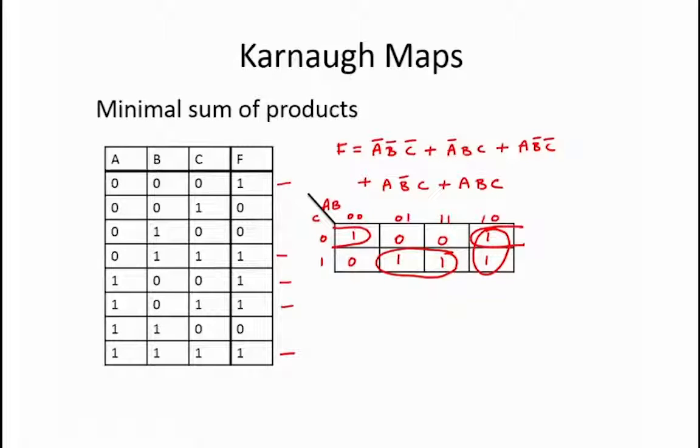Note that having overlapping ones in your groupings is allowed and desired if it will result in a simpler product term. In our example, we circle the bottom two middle ones which represent the term BC because A appears in both its low and high form in the grouping. The next set of ones are the two in the rightmost column. These ones represent the term A not B. Finally, our last grouping wraps around the first row to create the term not B not C.